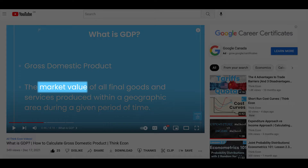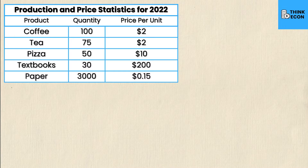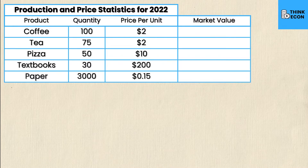The first thing is market value. GDP is calculated in terms of market value, or the number of dollars of output, not how many products were produced. So it's not like GDP would consist of this many units of coffee and this many units of tea and this many units of pizza, etc., but rather the market value of each of these things added together. How do you calculate the market value? You take the quantity sold and multiply it by the price per unit — that gives you the market value.